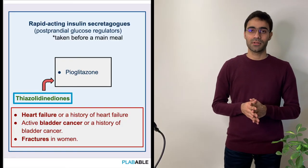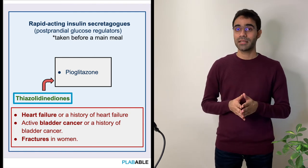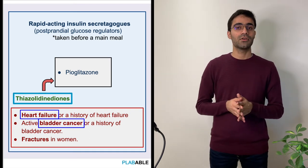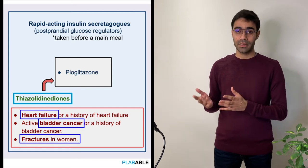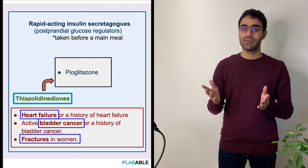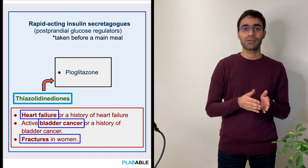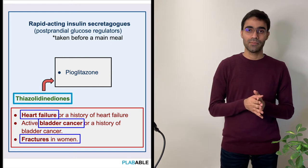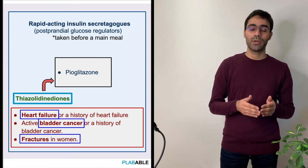Another important class of drugs is thiazolidinediones, such as pioglitazone. A very important point to remember is that there is an increased risk of bladder cancer, heart failure, and fractures — especially in women. If a person works in a dye industry and is already at increased risk of bladder cancer, we should be very cautious. This drug should also be avoided in patients presenting with uninvestigated macroscopic hematuria, which is a risk factor for bladder cancer.